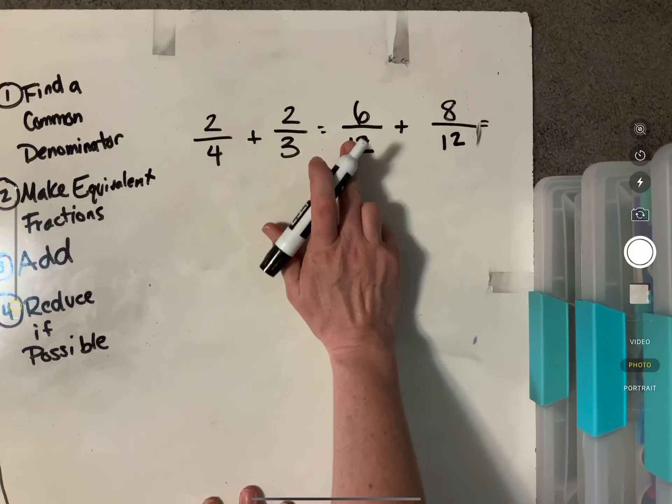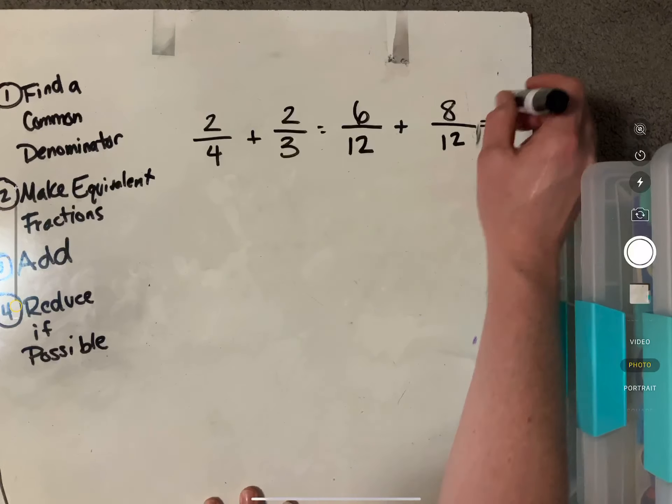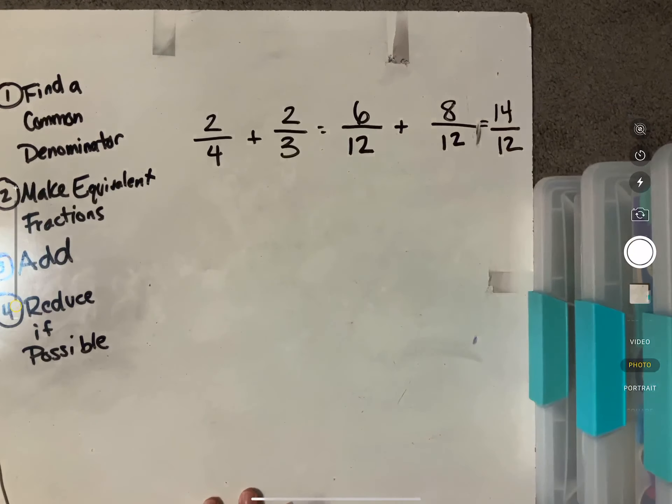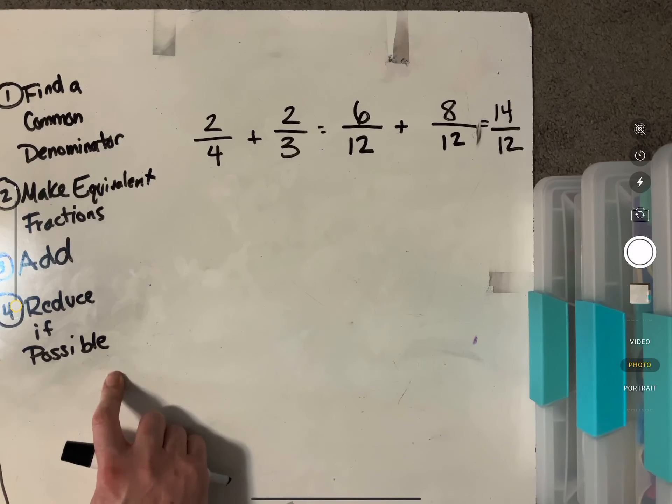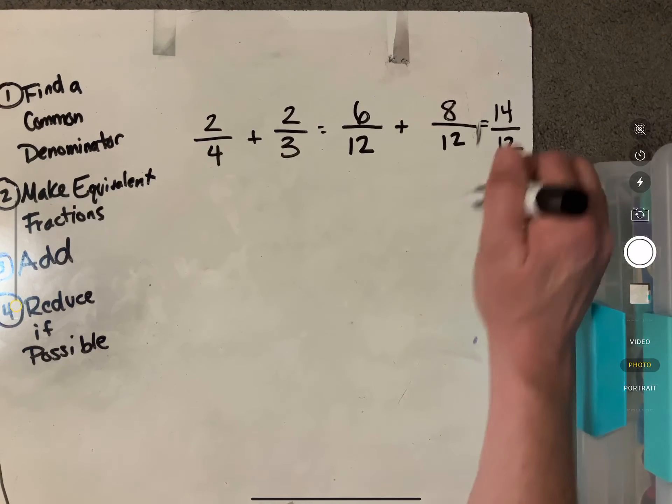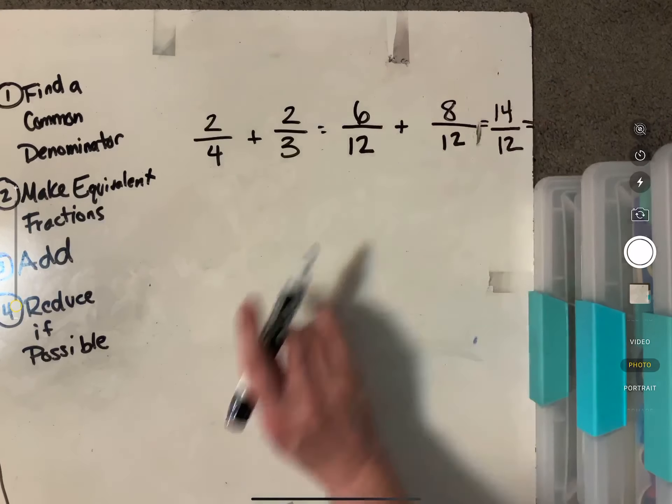When we add these up, eight and six are going to be 14 twelfths. Now with reducing if necessary, or if possible, this is an improper fraction. So we're actually going to have to reduce this in kind of a different way than our typical just reducing. We're actually going to turn this into a mixed number.